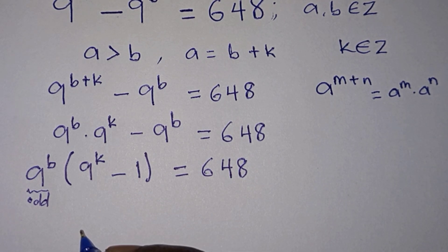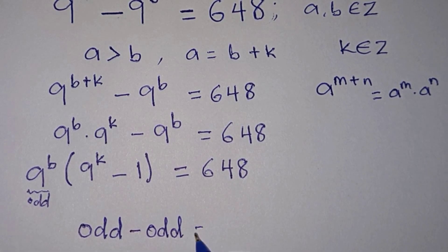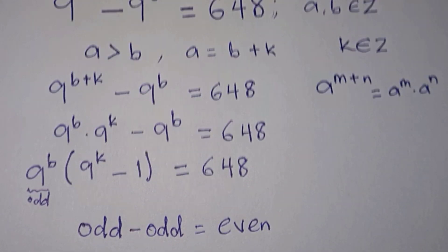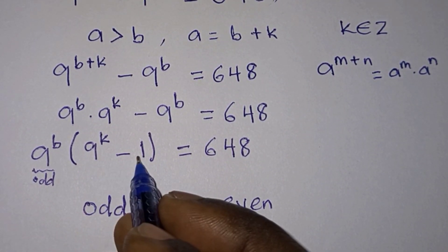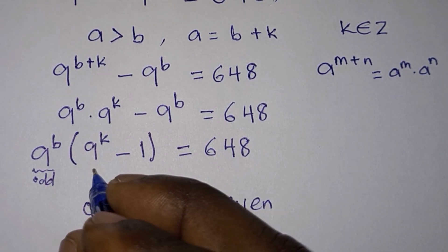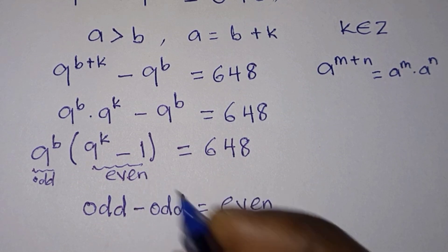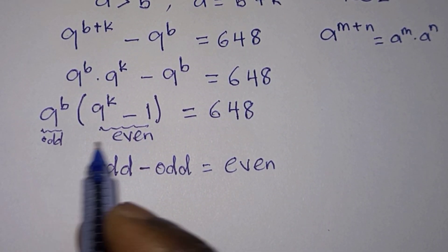Remember that whenever you subtract an odd number from another odd number, the difference is even. So 9 to the power k minus 1 gives us an even number, meaning the left hand side is an odd number times an even number.